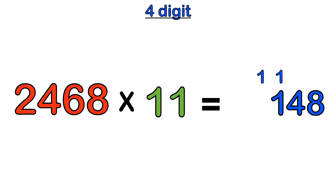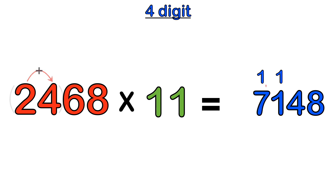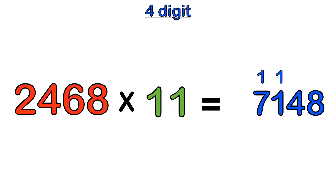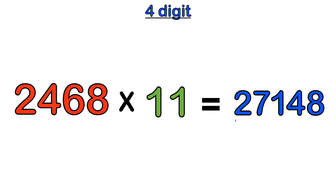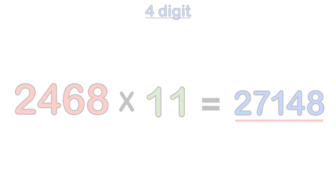Then we move one space to the left. Two plus four gives six, and adding the carried one gives seven. Then we move one space to the left — we've reached the beginning of our number — and multiply the first digit, two, by the first one in 11: two times one gives us two. So the answer is 27,148.